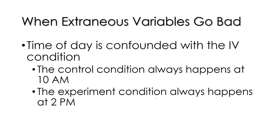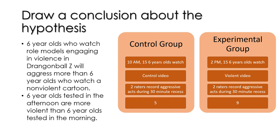In the corrected experiment, when we see nine acts of aggression in the experimental group and five in the control group, we can conclude that the type of video watched causes greater aggression in the children. That reviews the whole idea of confounding and how it makes results uninterpretable.